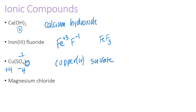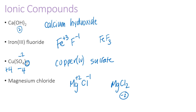The last ionic example is magnesium chloride. There's no Roman numeral for magnesium because it's in the second column and its charge is always plus two. Chloride was originally chlorine and its charge is minus one. In order for the charges to add up to zero, I need two chlorines — each gives me minus one for a total of minus two to balance the plus two on the magnesium.